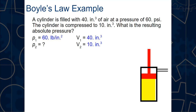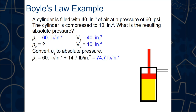Our knowns: P₁ = 60 psi (gauge), V₁ = 40 cubic inches, V₂ = 10 cubic inches. P₂ is unknown. First, convert P₁ to absolute pressure: 60 + 14.7 = 74.7 psi. Then apply P₁ × V₁ = P₂ × V₂: 74.7 × 40 = P₂ × 10, giving us 2988 = P₂ × 10, so P₂ = 298.8 psi absolute pressure.